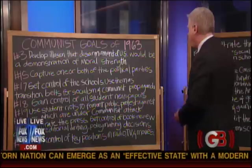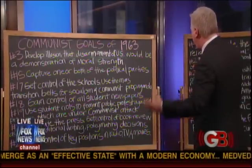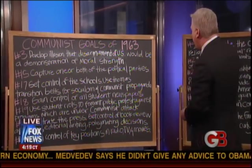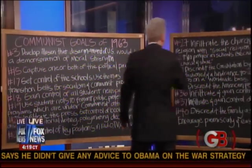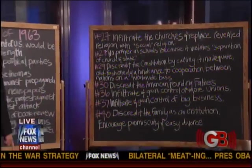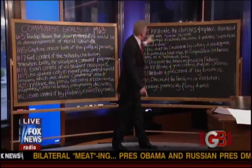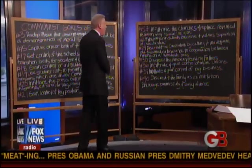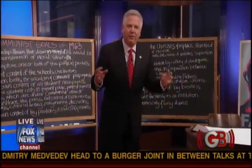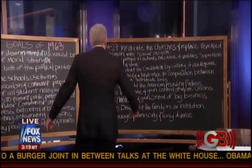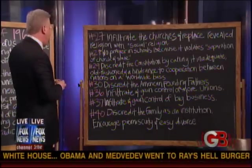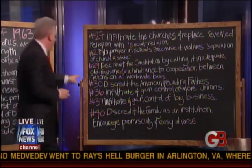Have you been watching this show? Number 20: infiltrate the press, get control of book review assignments, editorial writing, policymaking decisions. Number 21: gain control of key positions in radio, TV, and movies. Number 27: infiltrate the churches and replace revealed religion with social religion. Number 28: no prayer in schools because it violates separation of church and state. In New Haven they just took 'year of our Lord' out of their diplomas because it's offensive. Number 29: discredit the constitution by calling it inadequate, old-fashioned, a hindrance to cooperation between nations on a worldwide basis. That's about to happen.